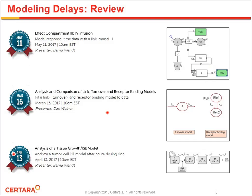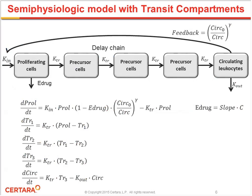On April 13th, we had a tumor growth inhibition model where there was a delay between drug application and cell death of tumor cells. In that case, you remember there was a Simeone model and a Jumby model where we applied a transit compartment model. That's also what we're going to apply here — taken directly from Friberg. So this is the Friberg model, which uses transit compartments to model the delay chain.